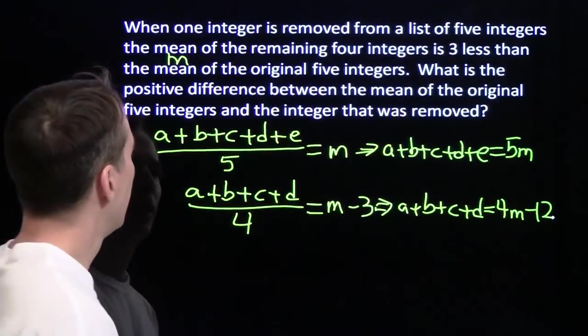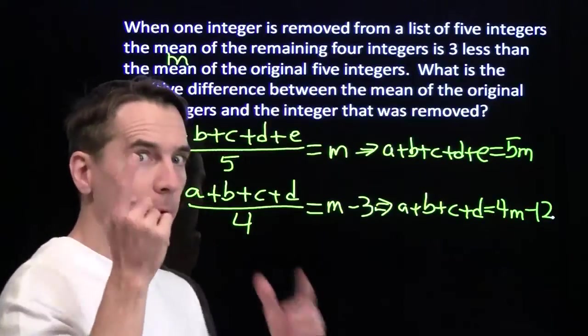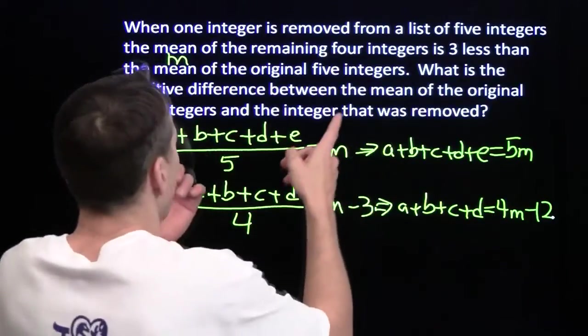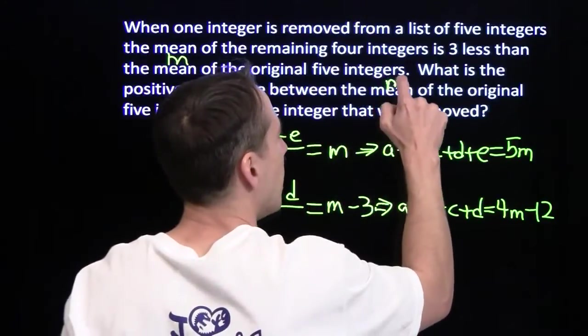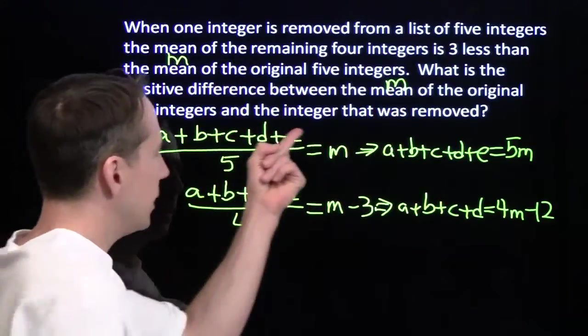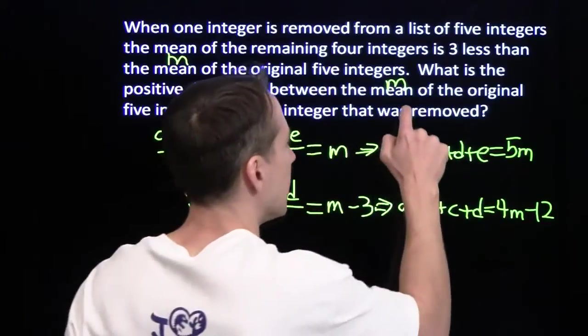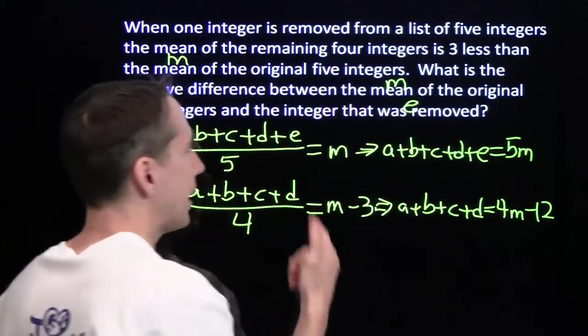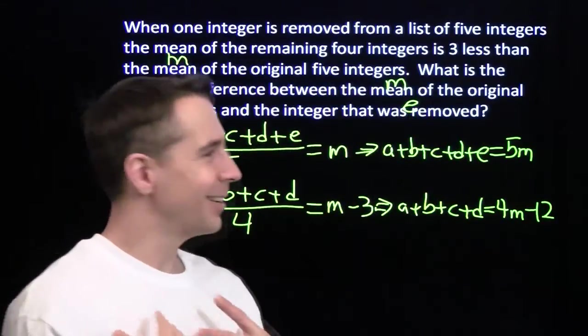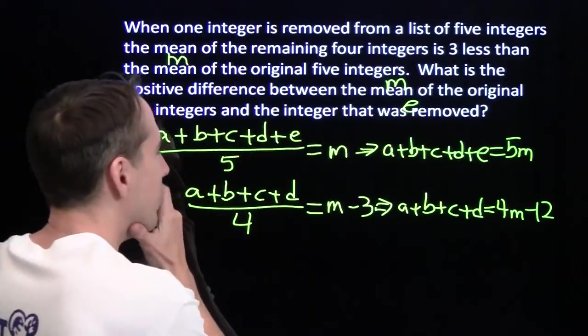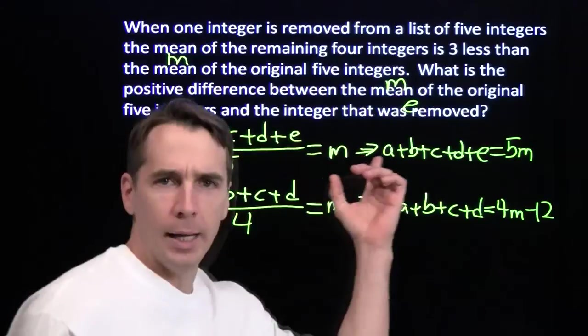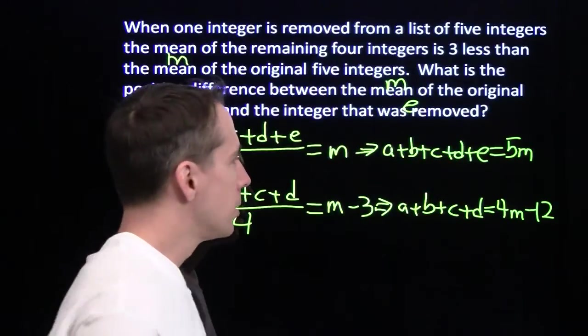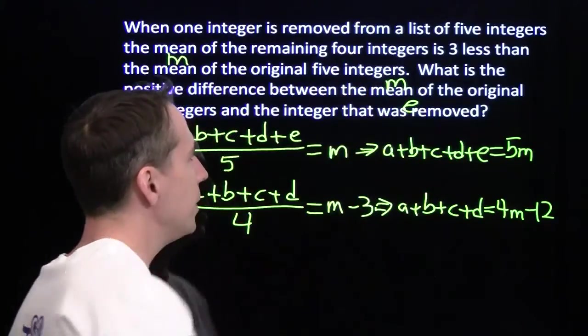What am I going to do with all this? What am I looking for here? Keep your eye on the ball here. Positive difference between the mean, that was M, and the integer that was removed, that was E. So all I care about is M, E. That's right. All I care about is me. My mom always said that. I don't care about A, B, C, and D.